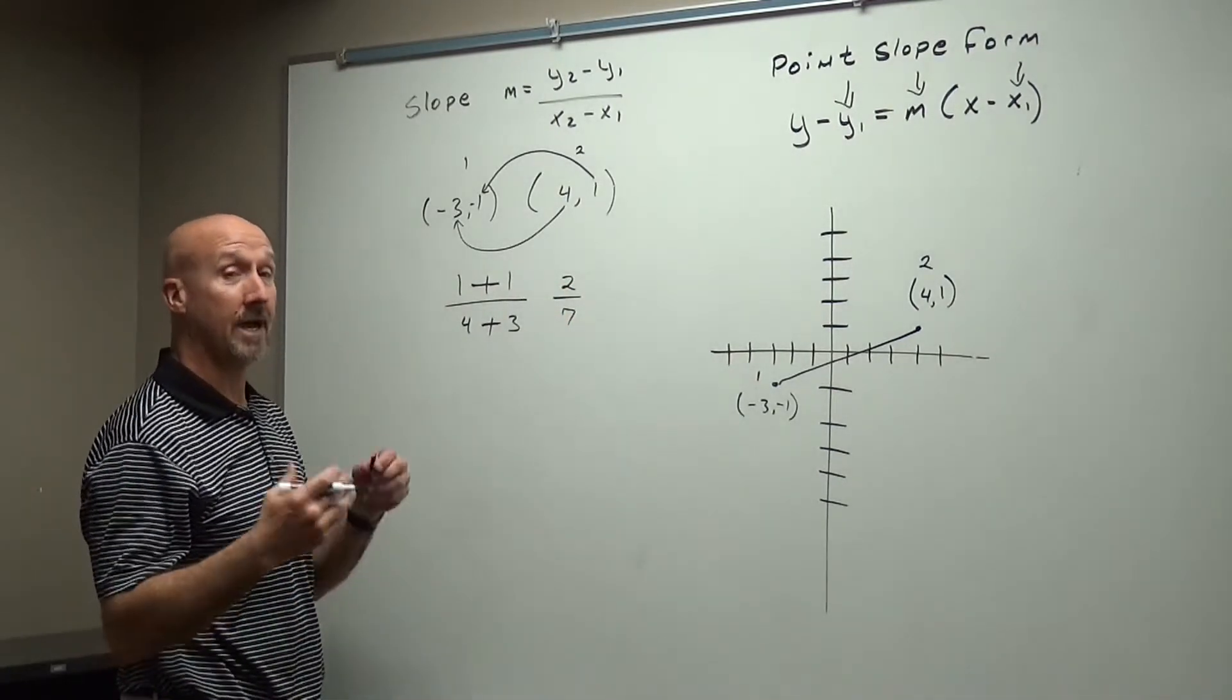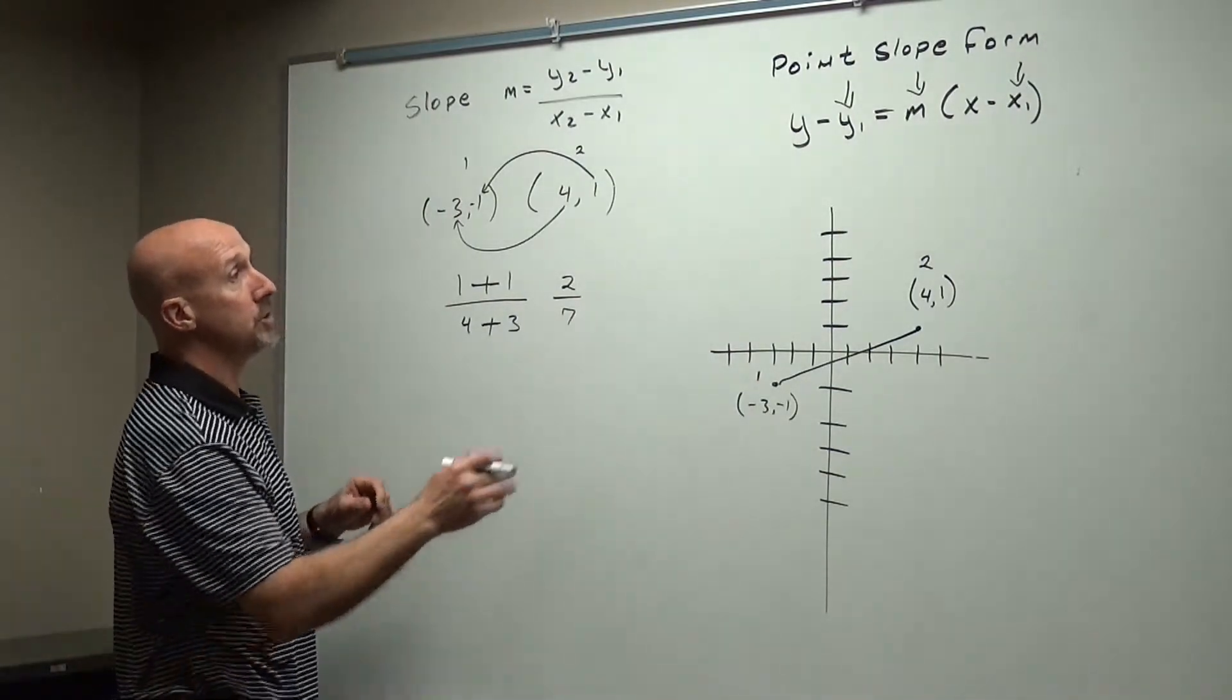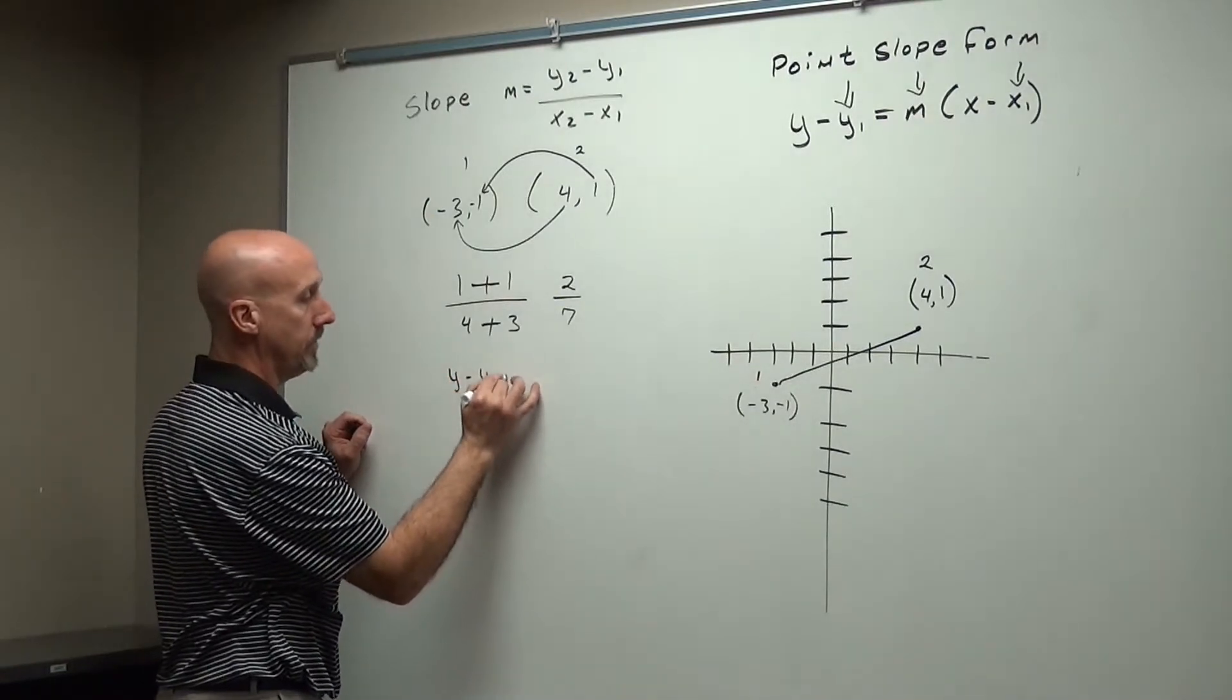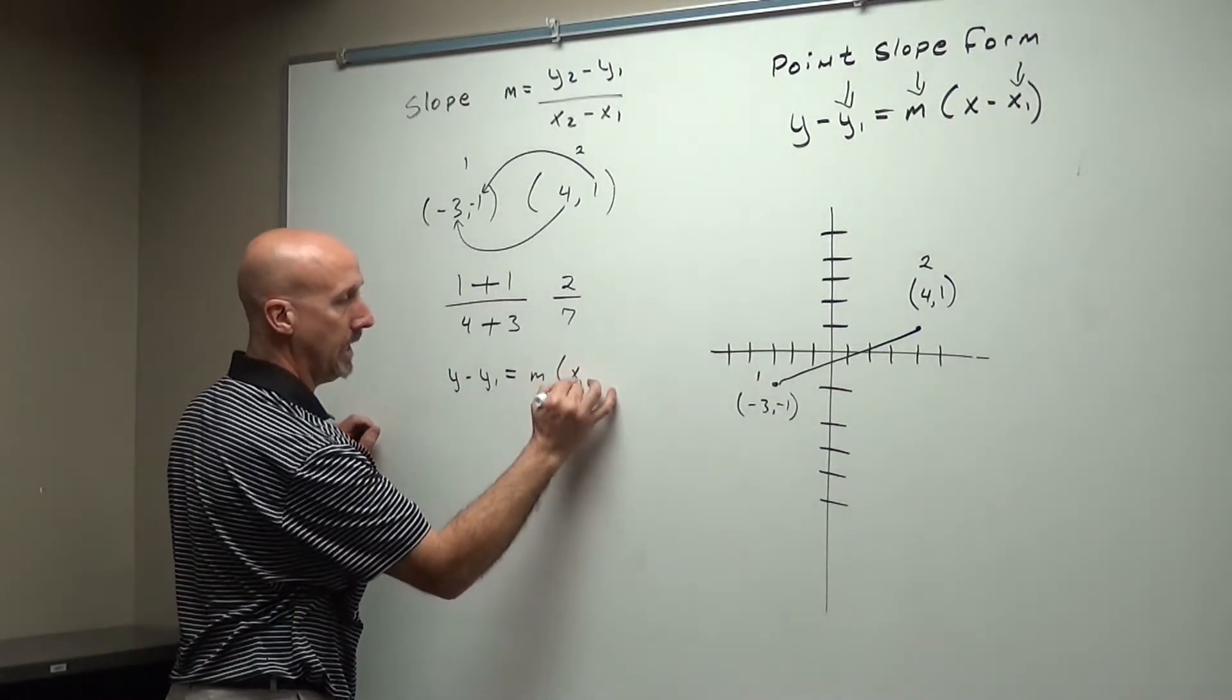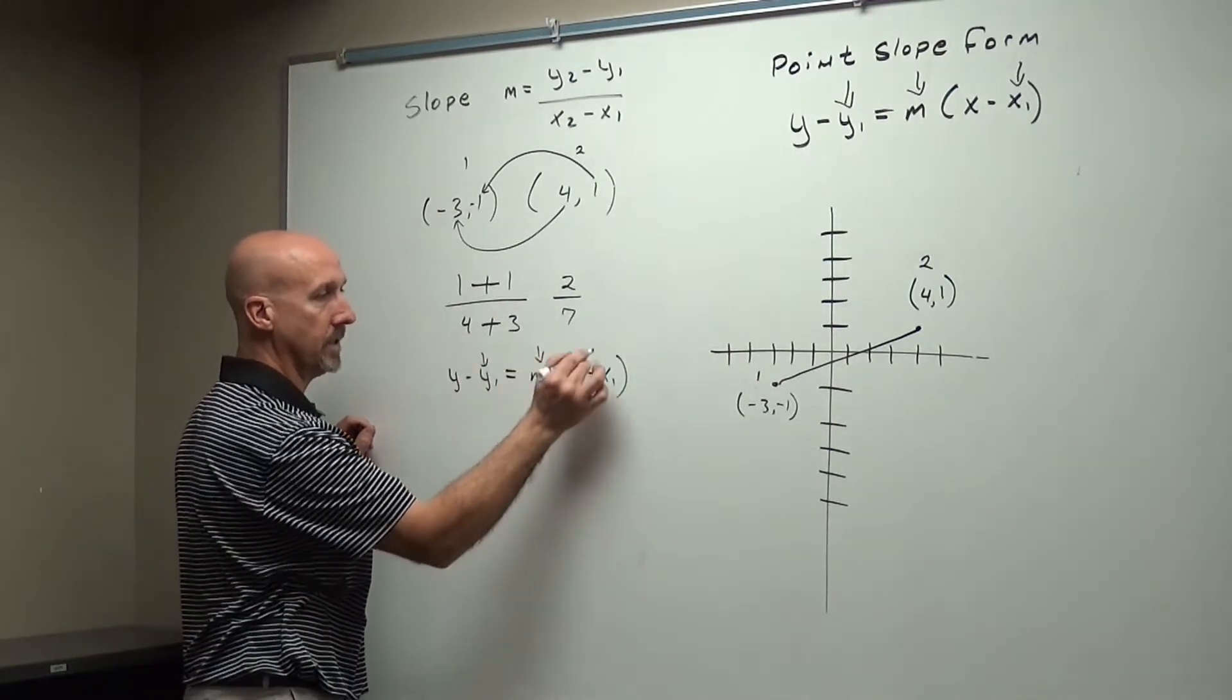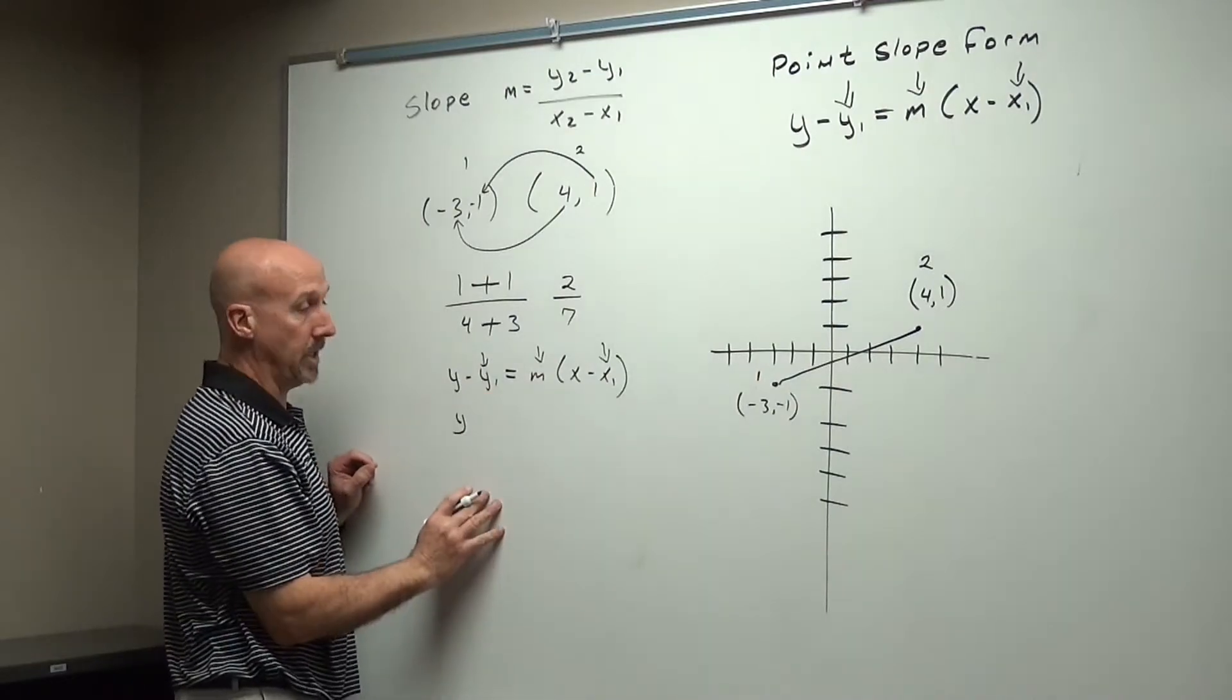So we're going to get 2 over 7 here. Now, this is going to be where it gets a little bit tricky, because of fractions. So we're going to use our formula, y minus y1 equals m, x minus x1,